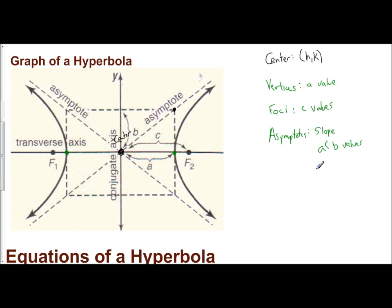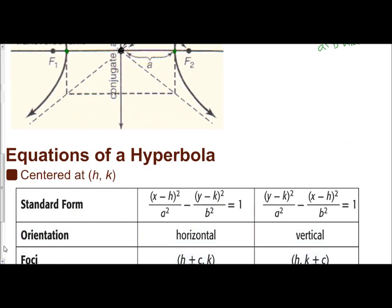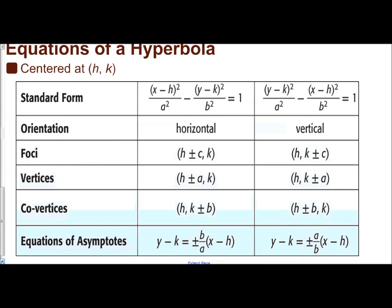Let's look at all the equations. The center of the hyperbola is at HK. There are two different forms: the one with X first, minus Y, is a horizontal hyperbola; the one with Y first, minus X, is a vertical hyperbola. Y is your vertical direction, X is your horizontal direction — use which variable comes first to identify the orientation.